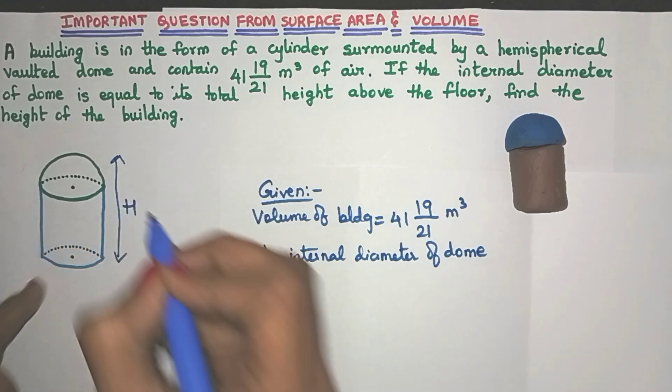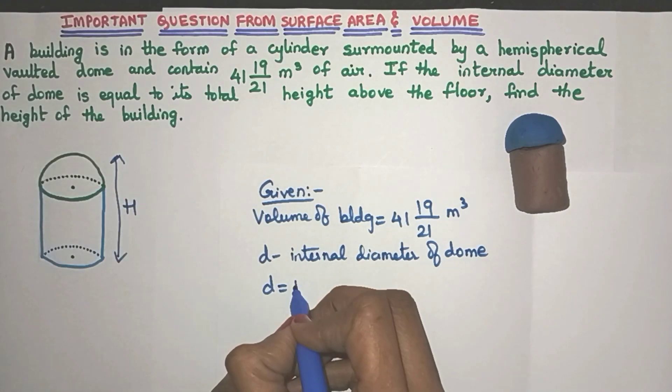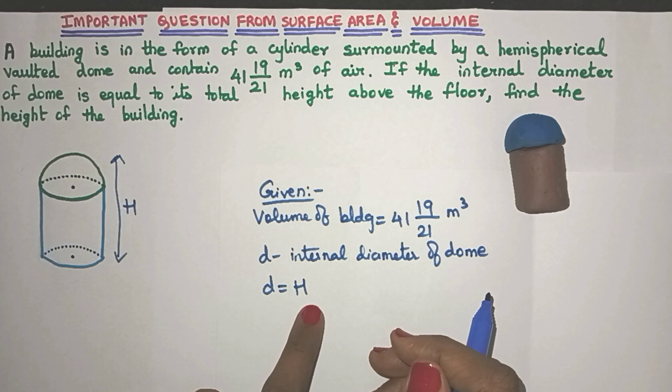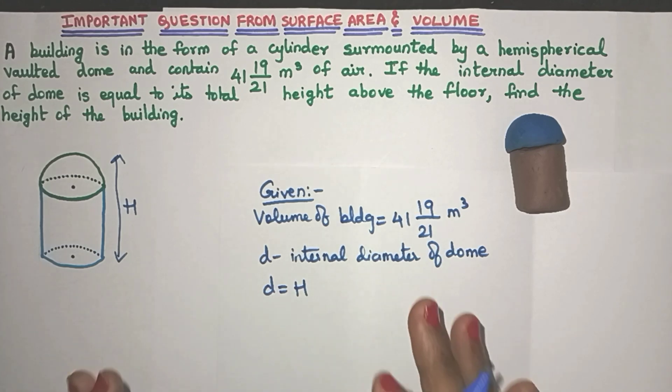So let me call that total height to be capital H. So they are saying that D is equal to capital H. I hope it's clear till here.